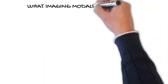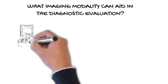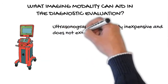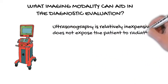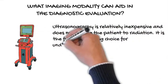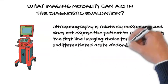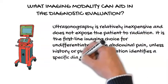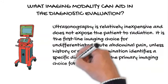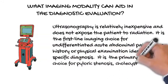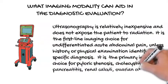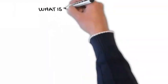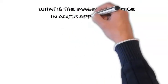What imaging modality can aid in the diagnostic evaluation? Ultrasonography is relatively inexpensive and does not expose the patient to radiation. It is the first-line imaging choice for undifferentiated acute abdominal pain, unless history or physical examination identifies a specific diagnosis. It is the primary imaging choice for pyloric stenosis, cholecystitis, pancreatitis, renal calculi, ovarian cysts, ovarian torsion, and pregnancy complications.